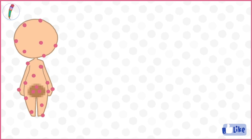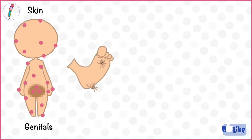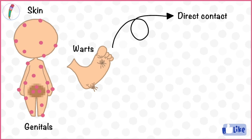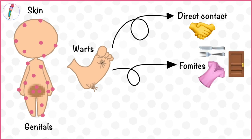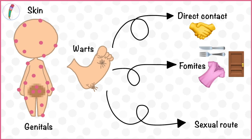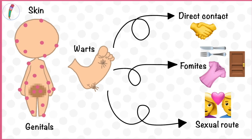The major reservoirs of the human papilloma virus are the skin and genitals of humans. The infection is transmitted through warts, which can be through direct contact or through fomites — common everyday objects likely to carry infection. It can also be transmitted through the sexual route by coming in close contact with the genitals of an infected individual.